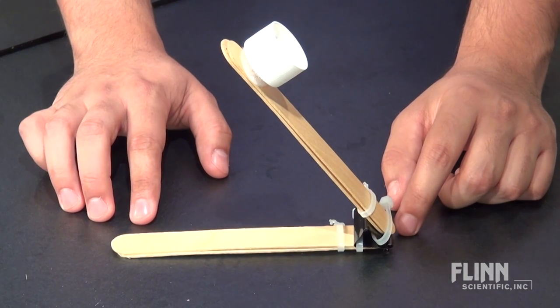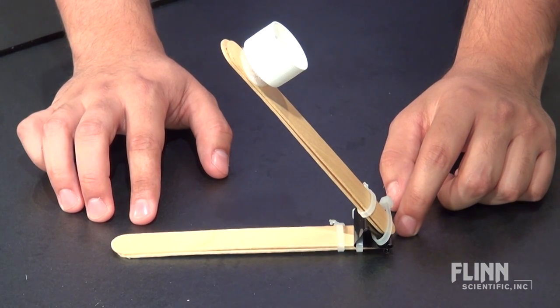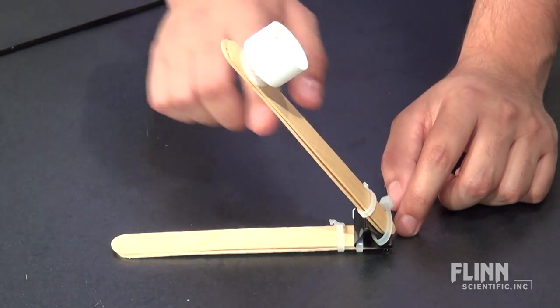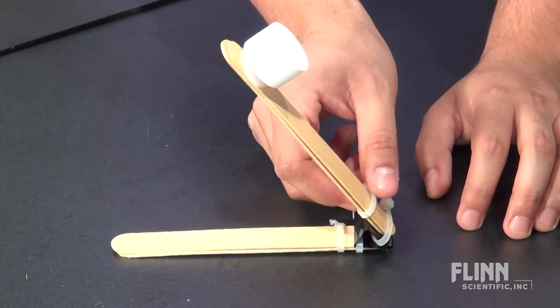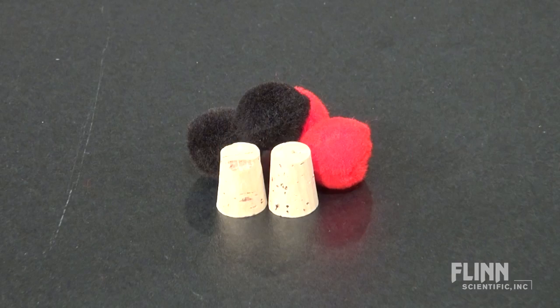First, challenge your students to understand the different factors that determine the path of the projectile, such as the angle of launch, size of the binder clip, tightness of the cable tie, and type of projectile.